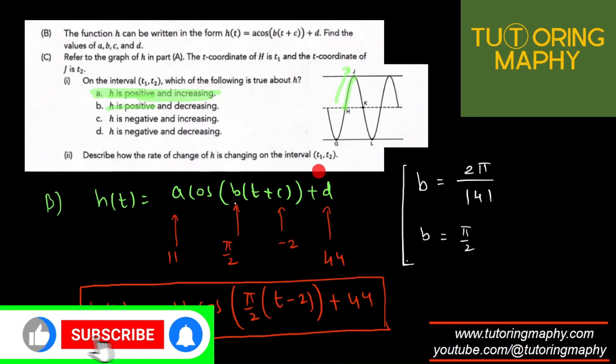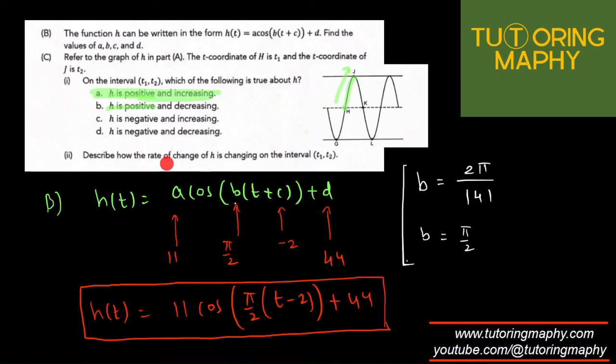Describe how the rate of change of h is changing on the interval t1 to t2. They're asking about the change of the rate of change, which is concavity. From t1 to t2 is a frowning phase, a concave down shape. When we have a concave down function, the rate of change is decreasing.